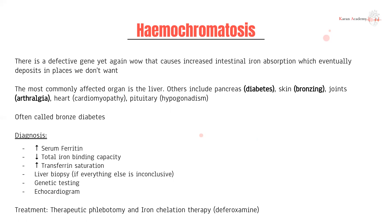Diagnosis is based on iron studies: you'd have high levels of serum ferritin and reduced total iron-binding capacity — because when you're iron overloaded, your body tries to reduce iron-binding capacity. You also have an increased transferrin saturation: transferrin is the protein binding and transporting iron across your body, so most of it will be bound to iron, which is what the saturation reflects.